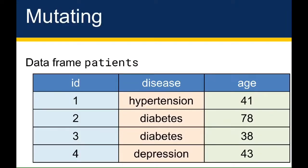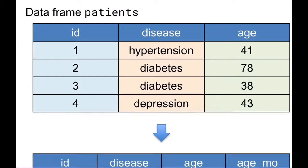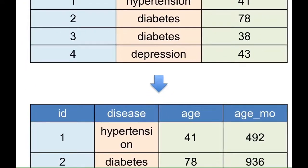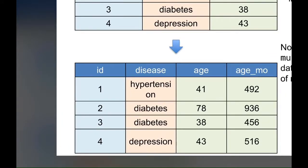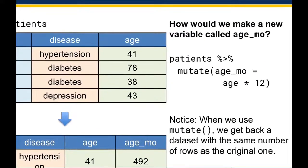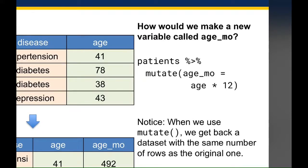If you wanted to add an additional column called age_mo for age in months rather than overwriting the existing age column, you'd write patients then mutate(age_mo = age * 12). What dplyr does is look for a column called age_mo; it doesn't find one, so it creates it. This is why mutate can both overwrite data and create new variables — it depends on whether the variable name you're assigning already exists in the data frame.